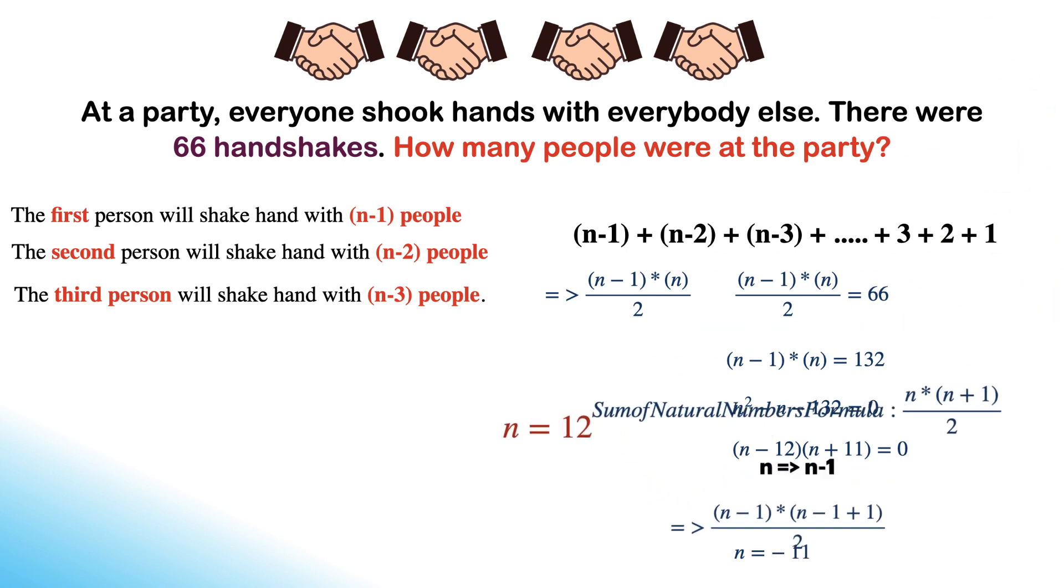Since the number of people can't be negative, n will be 12. Hence there are 12 people in the party.